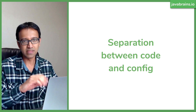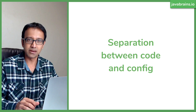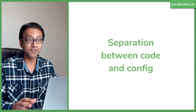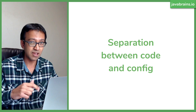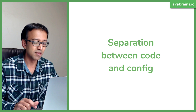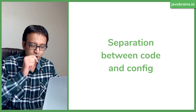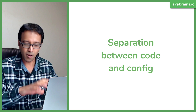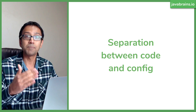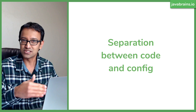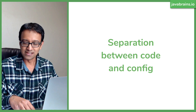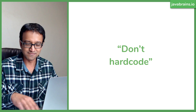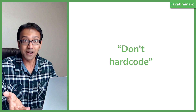Traditionally, the best practice is to take all those pieces and keep them separate from the actual code. For example, if you're working on an application that connects to a database, you have a database connection string and credentials to the various things the application needs to connect to at runtime.